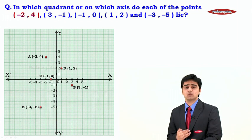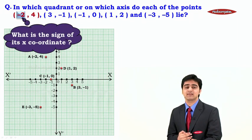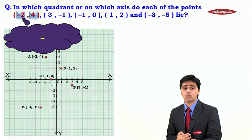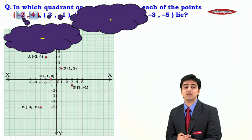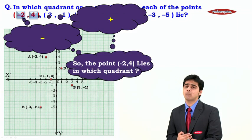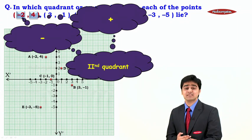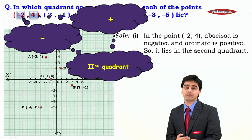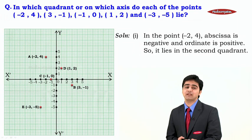The first point has got its coordinates to be minus 2 comma 4. The sign of its x coordinate is minus, and the sign of its y coordinate is plus. So the point minus 2 comma 4 lies in the second quadrant. In the point minus 2 comma 4, the abscissa is negative and the ordinate is positive, so it lies in the second quadrant.